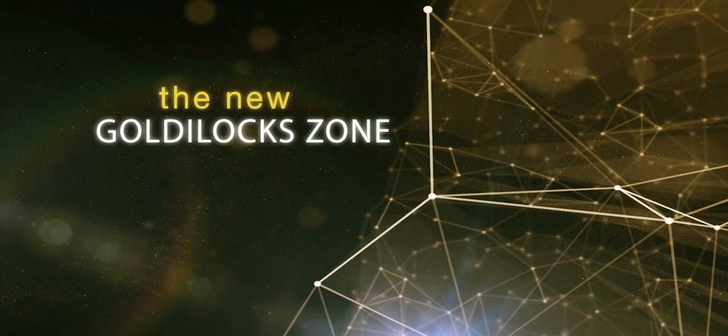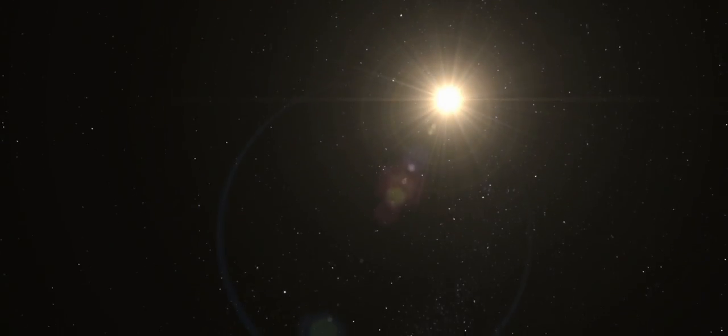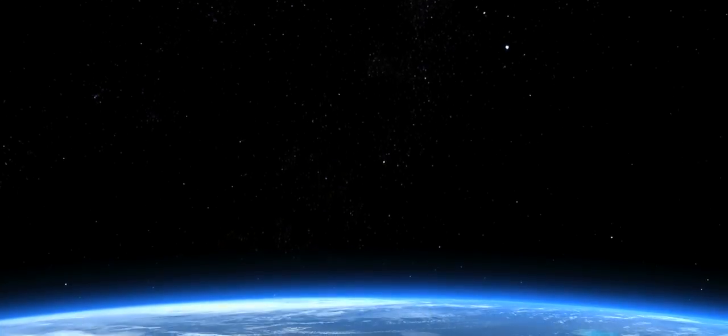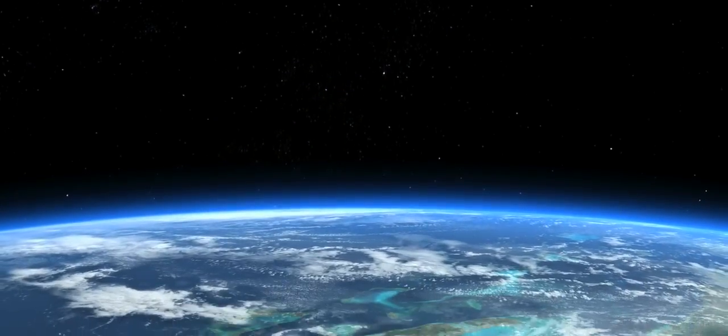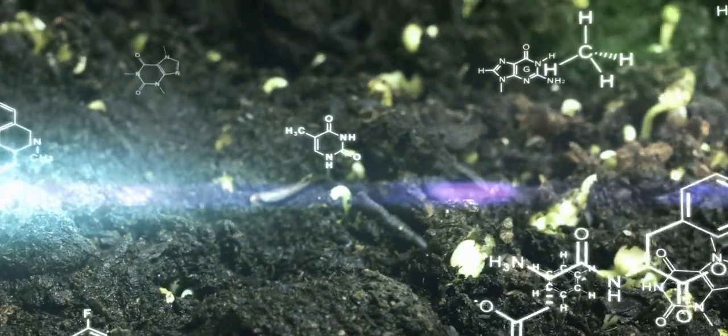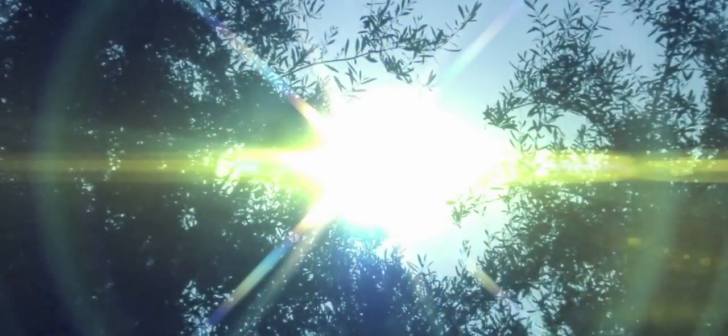We used to think that in order for a world to be habitable, you had to be at just the right distance from the sun or whatever your star was, such that you could have a liquid water ocean on the surface. Now, along with liquid water, life as we know it needs two other keystones. The first is the building blocks for life, the stuff you find in rocks. And the second is some form of energy to help power life.